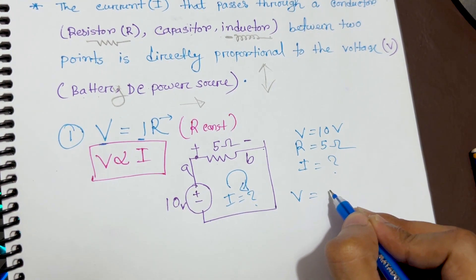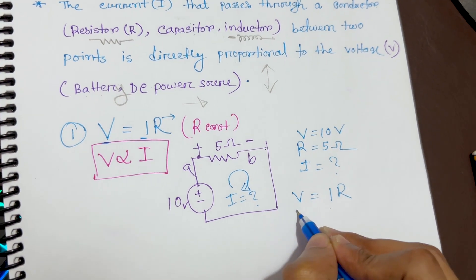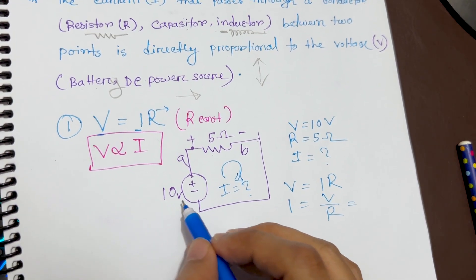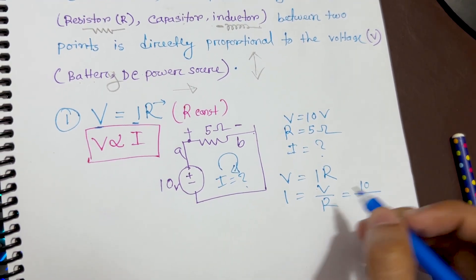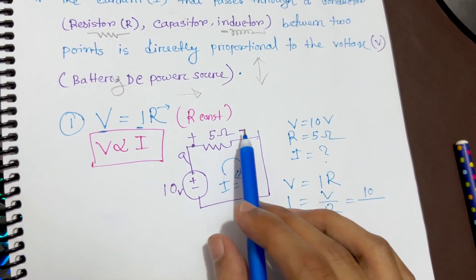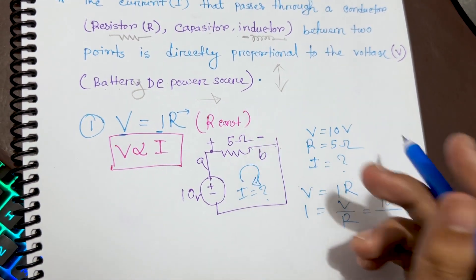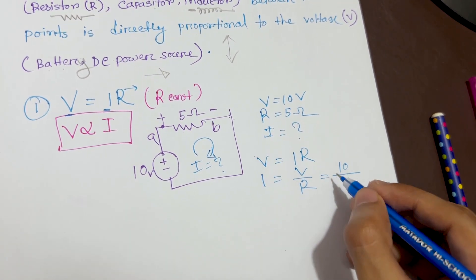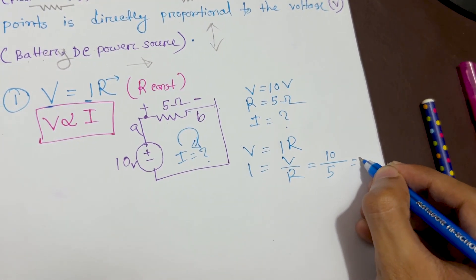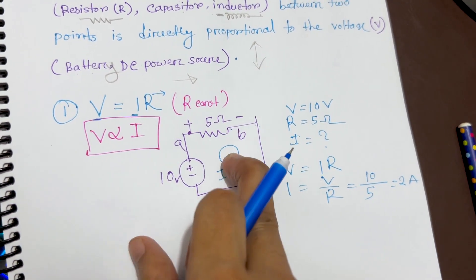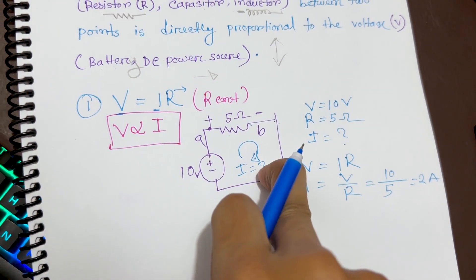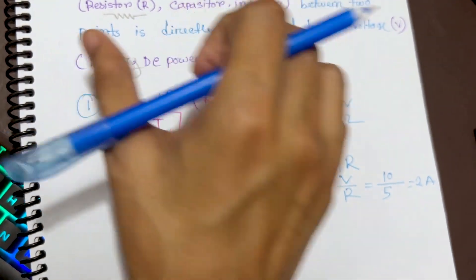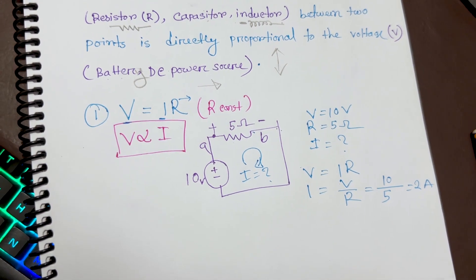According to Ohm's Law, V equals IR, so we can rearrange to get I equals V divided by R. The voltage is 10 volts divided by the resistance of 5 ohms — if we have multiple resistors we add them, but here there is only one — giving us 2 amperes. So 2 amperes of current is flowing through this circuit. This is how easily we can find the unknown current using Ohm's Law.